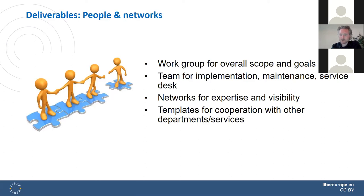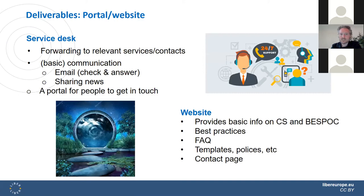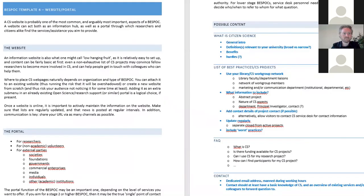We also include templates for cooperation with other departments and services — we are currently working on these and would like your input on whether they are what you're looking for. In addition, we would like to offer portal and website templates: for the creation of a service desk, for forwarding to relevant services, for basic communications, for sharing news, and for people to get in touch. The website can provide basic information on citizen science and the BSPOC, share best practices, include a frequently asked questions section, contain relevant policies, and naturally a contact page. This is an example of such a template — not yet fully finished, but a fairly complete website portal template shown here as a screenshot.